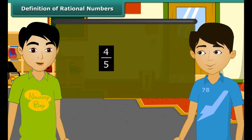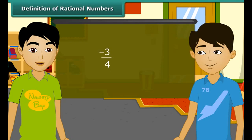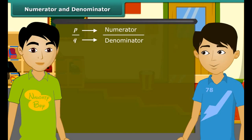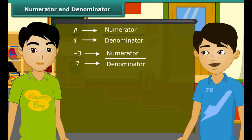Rahul, now you tell — is 4 by 5 a rational number? Yes, 4 by 5 is a rational number because it is in the form P by Q where Q is not equal to 0. And is minus 3 by 4 also a rational number? Yes, because P is equal to minus 3 and Q is equal to 4, and both are integers. In rational number P by Q, P is the numerator and Q is the denominator. For example, in minus 3 by 7, the numerator is minus 3 and the denominator is 7.